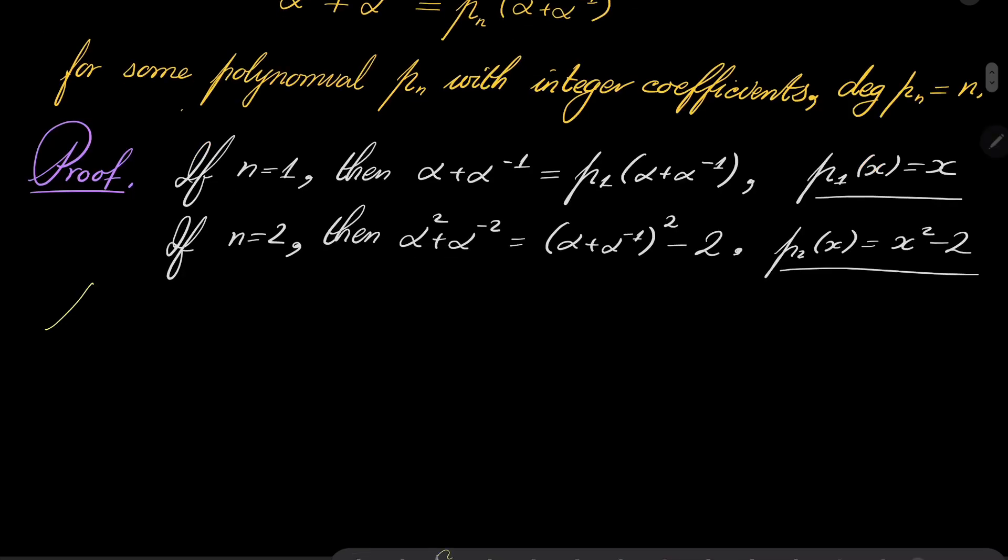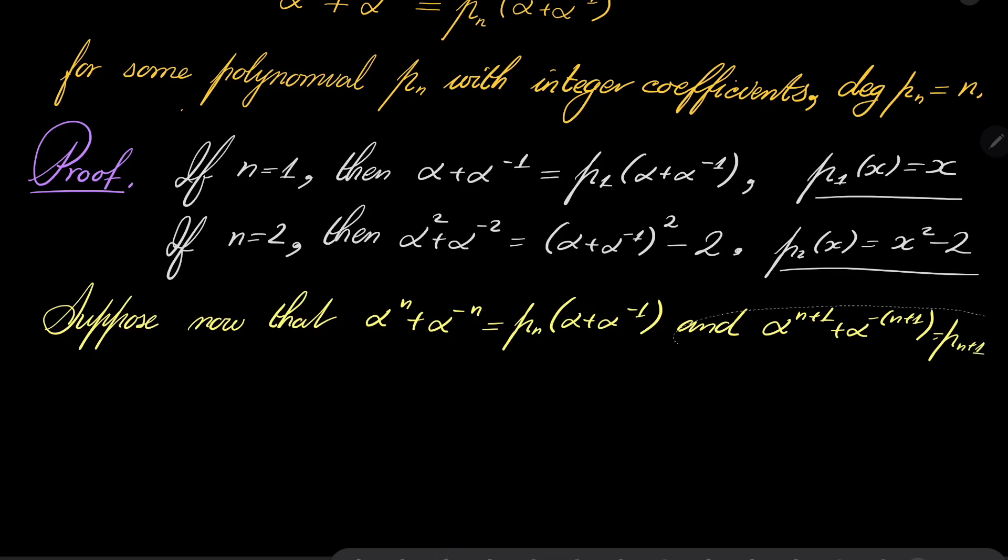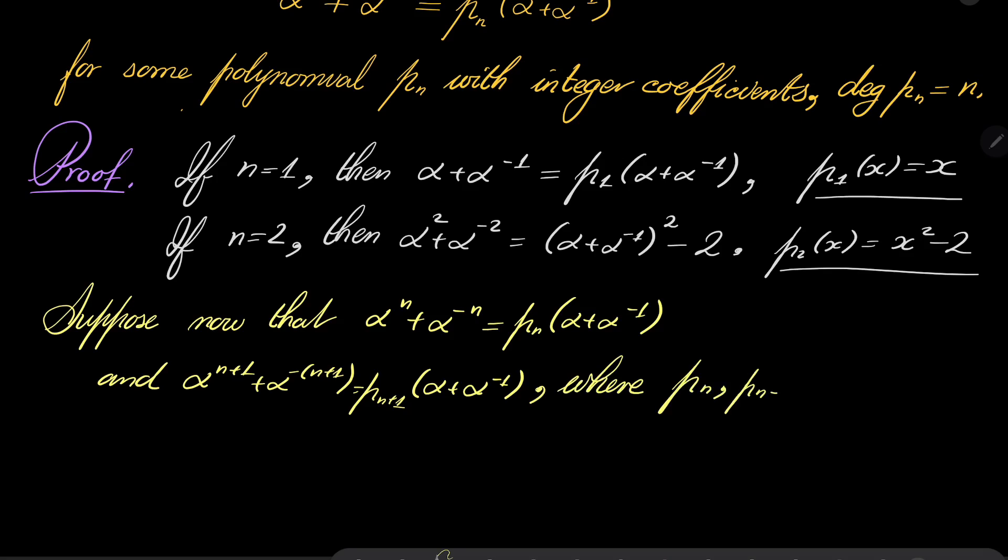Now, inductive step. Suppose now that α^n + α^(-n) equals p_n, and let's further suppose that it also holds for n+1, where p_n and p_{n+1} are polynomials with integer coefficients of degree n and n+1 respectively.